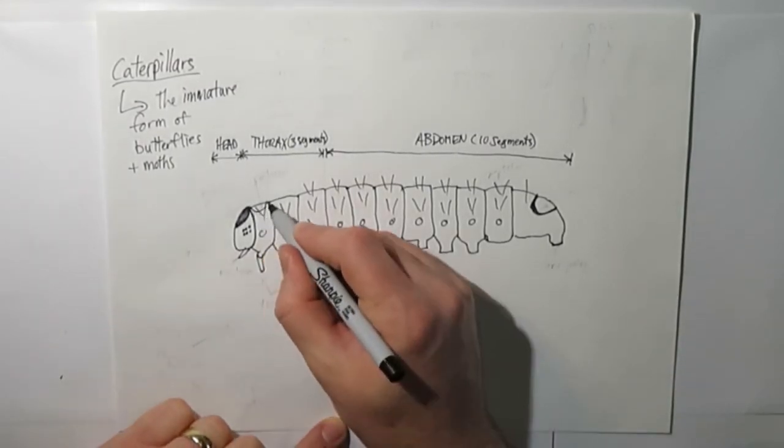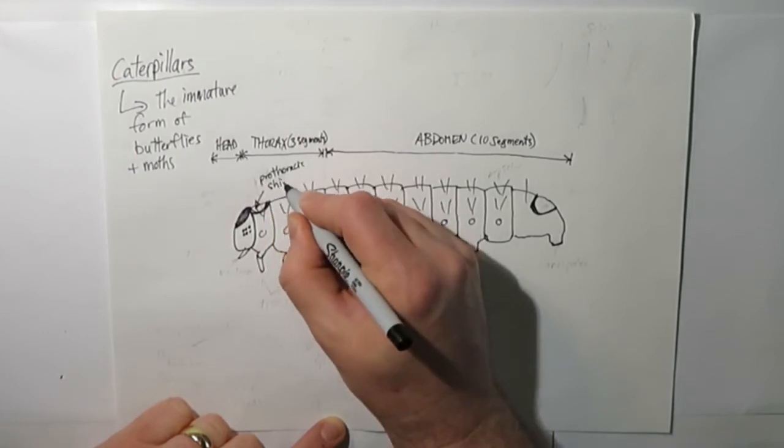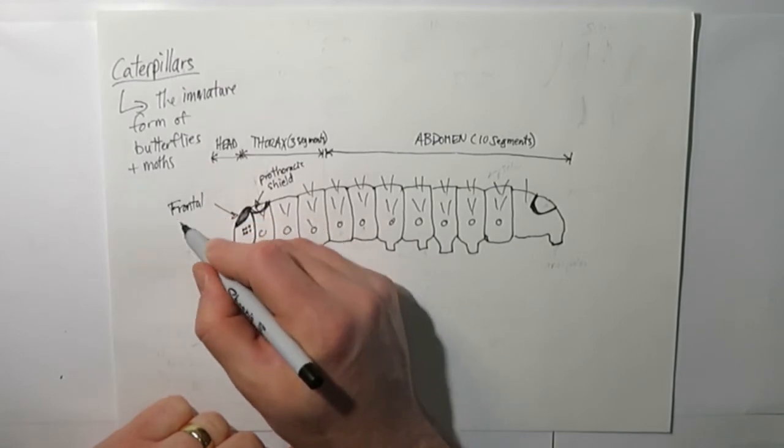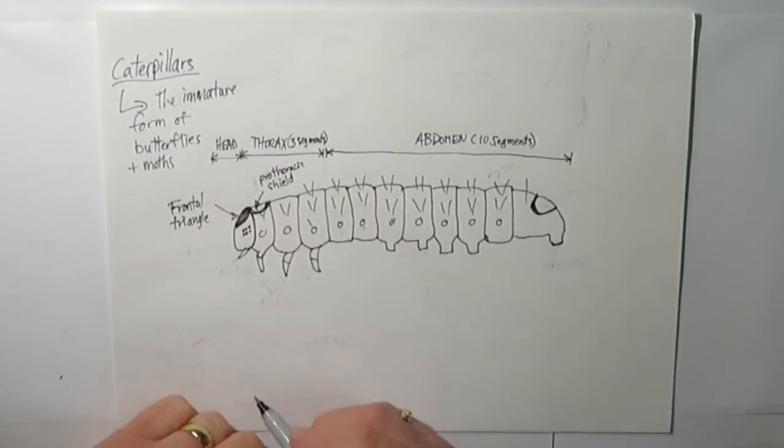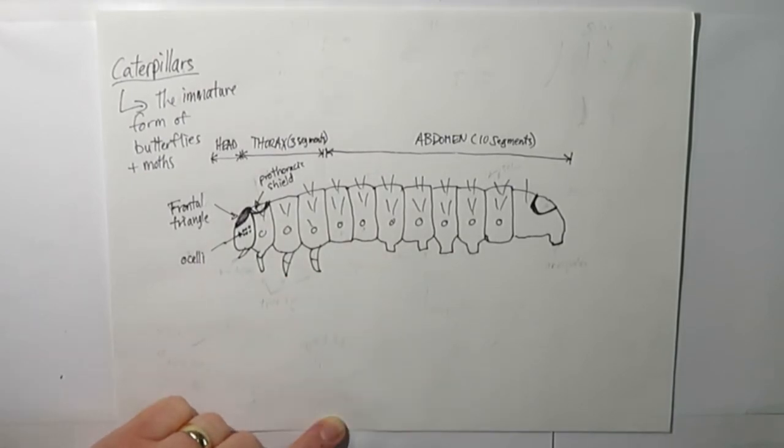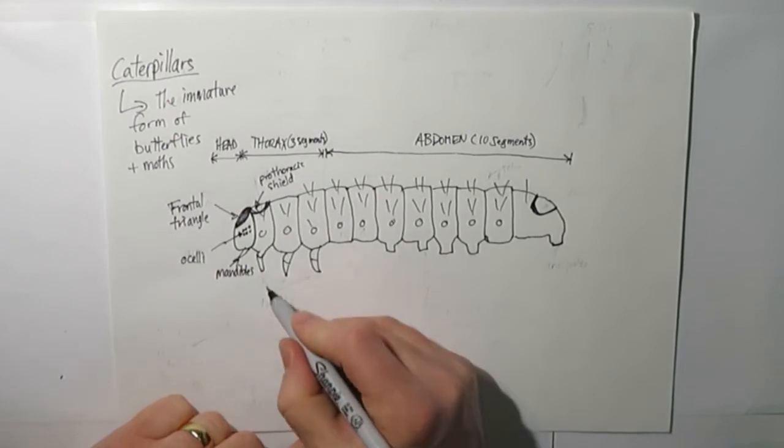On each of those segments you'll see different pieces. On the thorax there's a thing called the prothoracic shield which can vary and differ. Then there's a thing called the frontal triangle which is essentially the face of the caterpillar. These little dots are called ocelli, and the mouth parts are called mandibles.